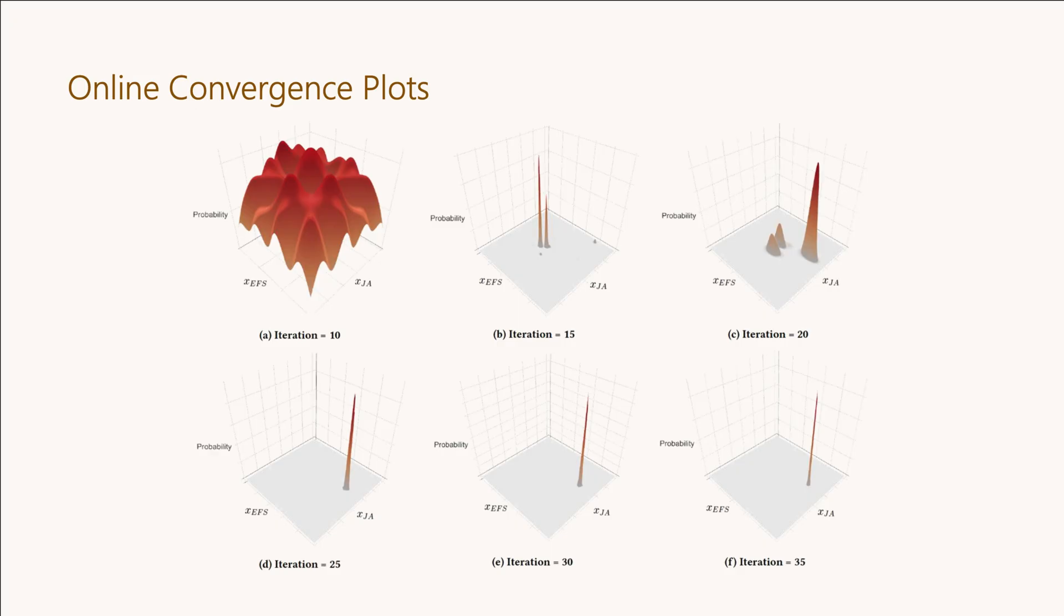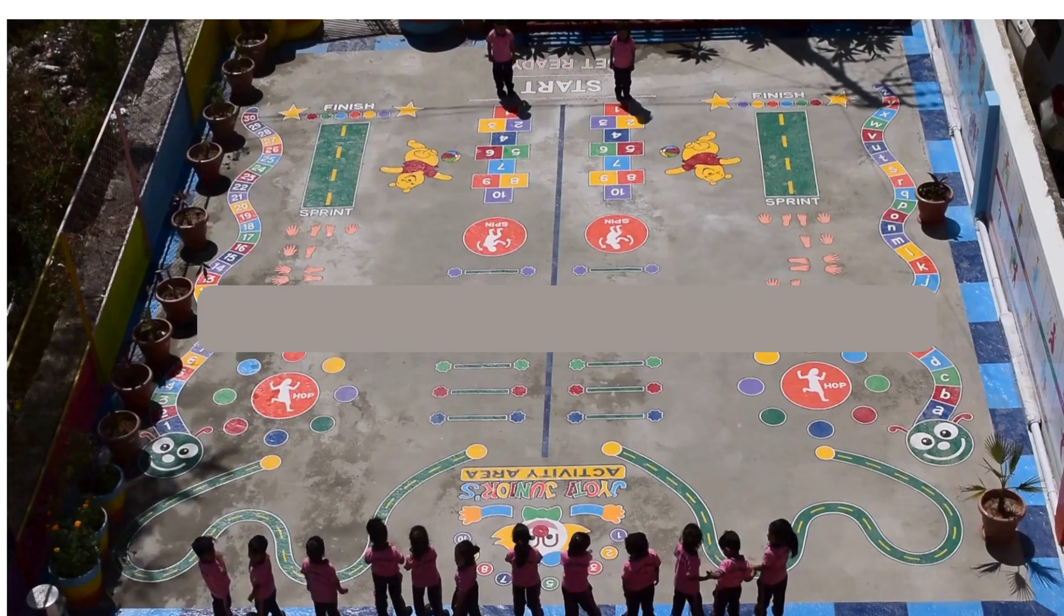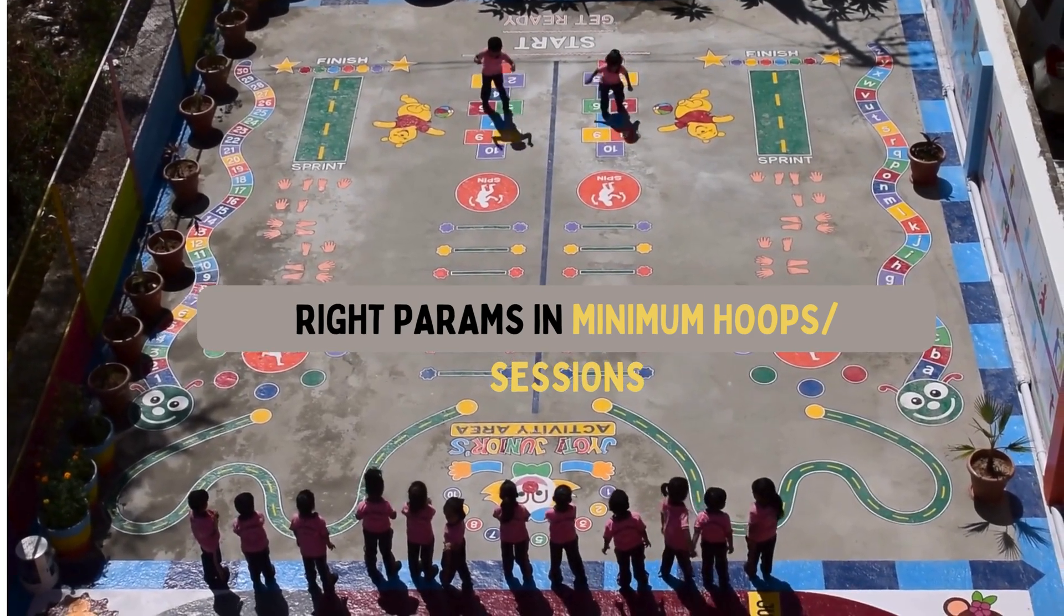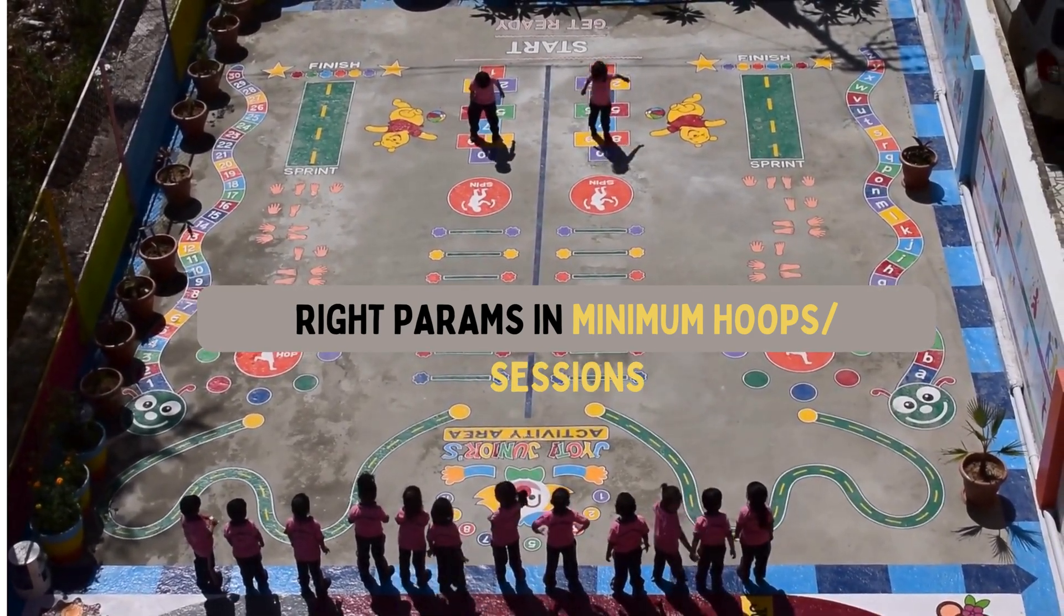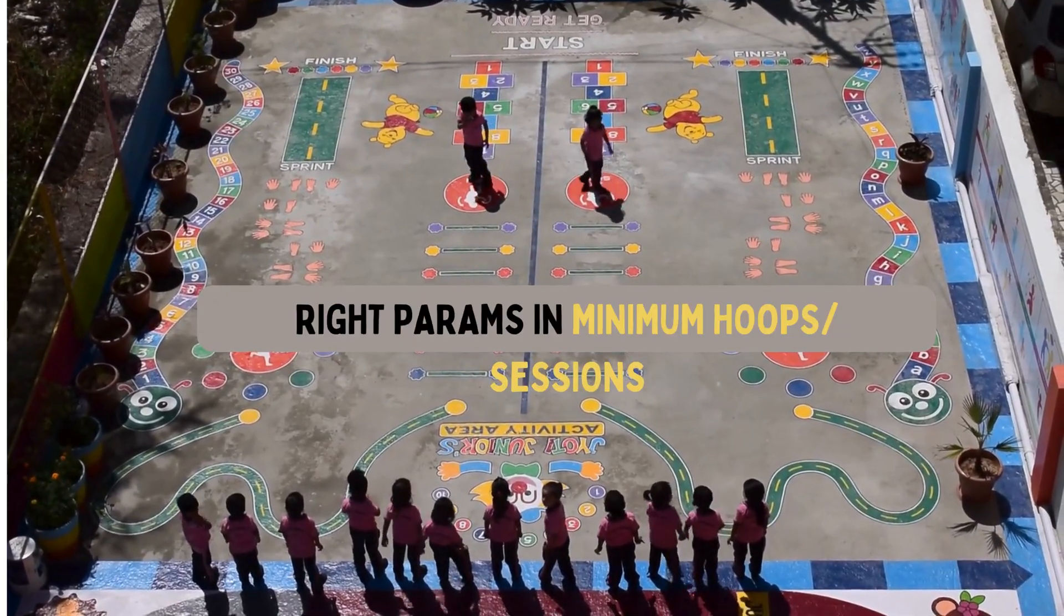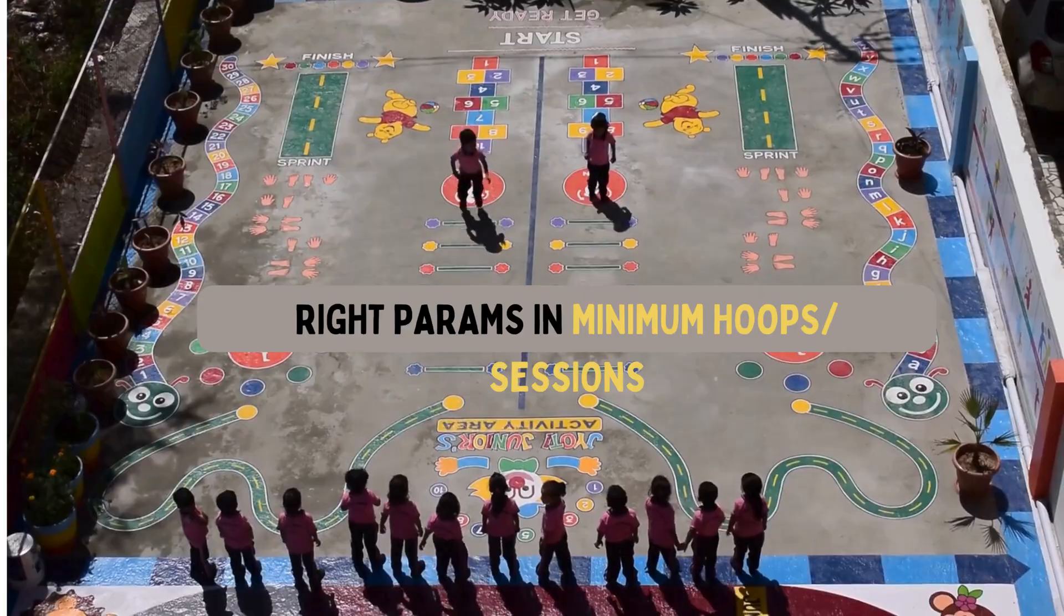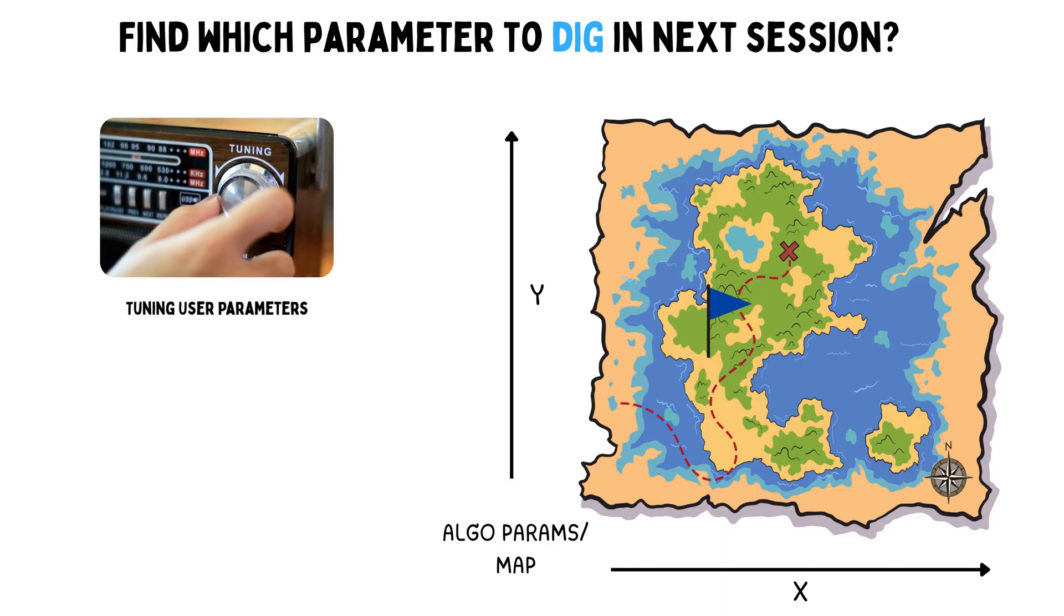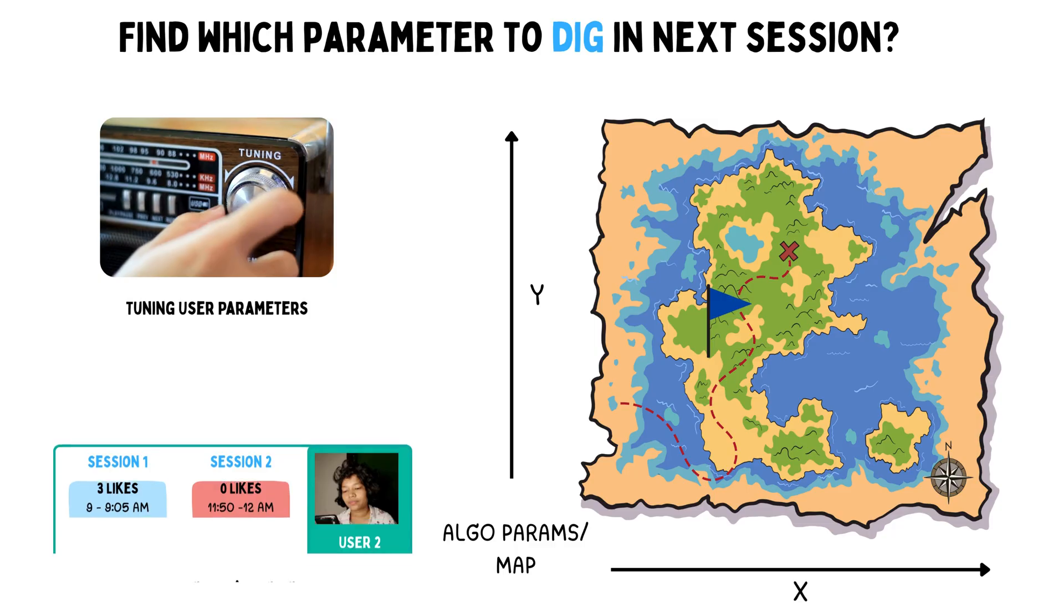That is where the bandit algorithms shine, and that's where we will use Gaussian processes with Thompson sampling. Now, even though the mathematics is very complicated, I'll try to simplify as much as possible. Think of x and y position as the parameters of the algorithm that need to be tuned for a specific user.